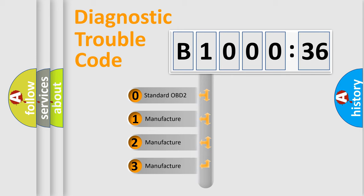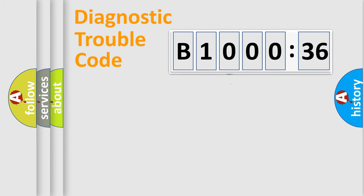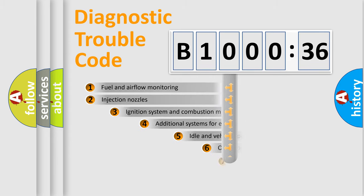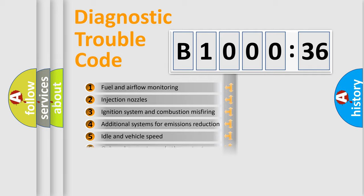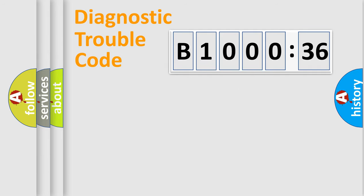If the second character is expressed as zero, it is a standardized error. In the case of numbers 1, 2, 3, it is a more prestigious expression of the car-specific error. The third character specifies a subset of errors. The distribution shown is valid only for the standardized DTC code. Only the last two characters define the specific fault of the group.